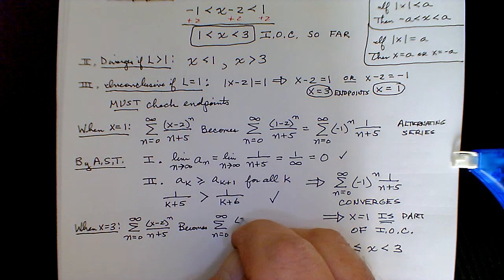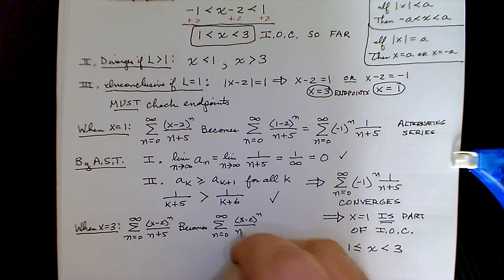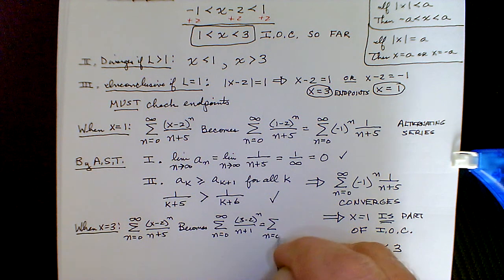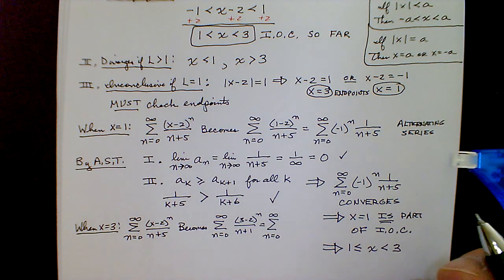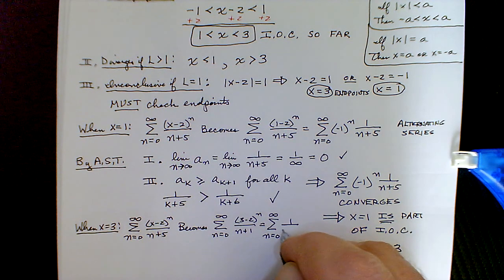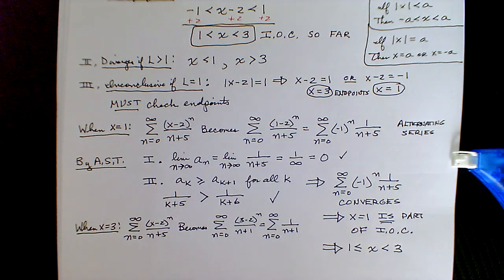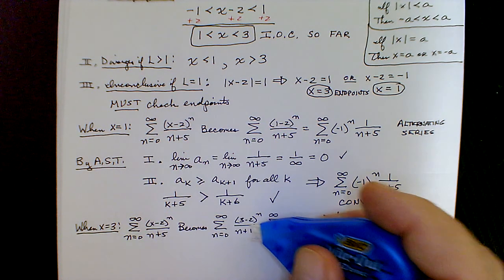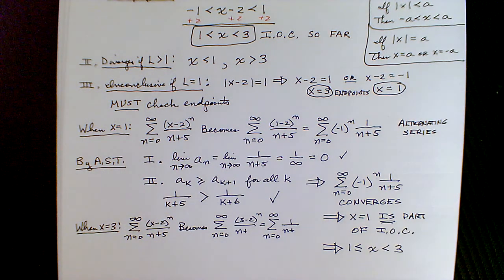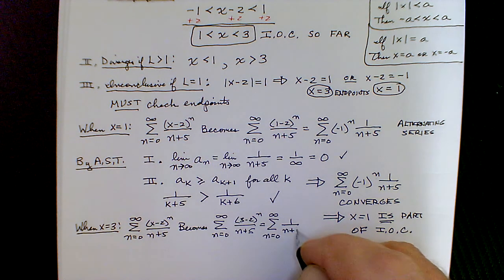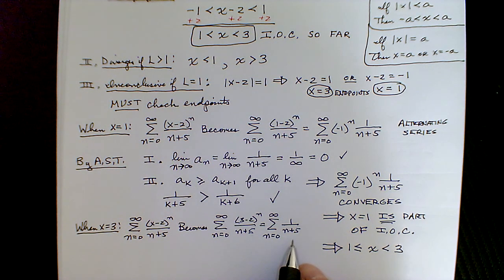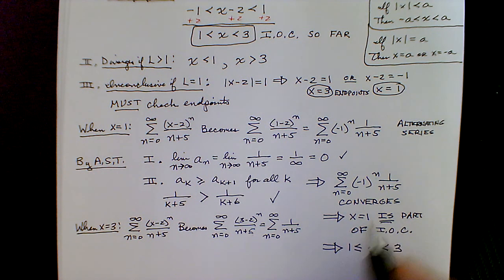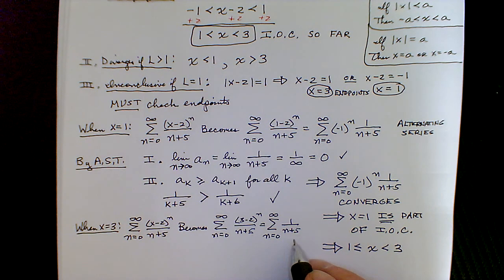That simplifies to the sum as n goes from zero to infinity of one to the nth over n plus five, and since one raised to any power is just one, this is the sum of one over n plus five. It's not an alternating series, so we can't use the alternating series test. It looks like a p-series, so we'll need a comparison test. The direct comparison test would fail, so I'm going to use the limit comparison test.